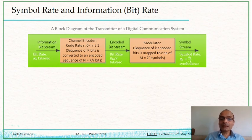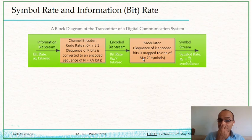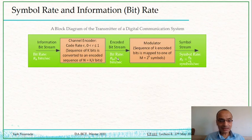Unlike the encoder, which increases the number of bits being transmitted, the modulator has the opposite effect. The modulator takes a total of small k encoded bits together at a time and converts them into one of M symbols. This means the symbol rate is (1/k) times RB divided by r, because those k bits together make up only one symbol.